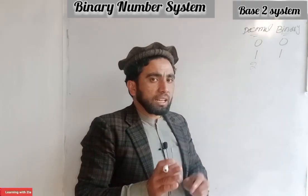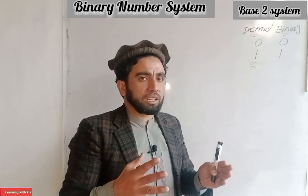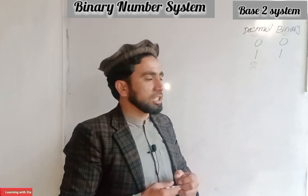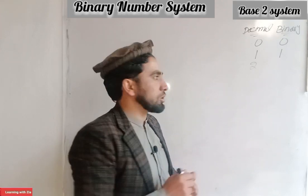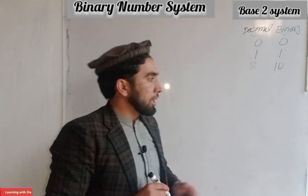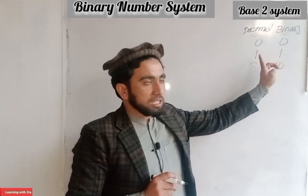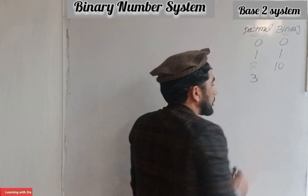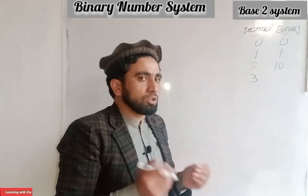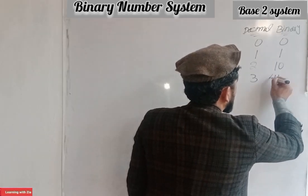We can use the decimal system alongside the binary system. The decimal number goes 0, 1, 2, 3, 4, 5, 6, 7, 8, 9. The decimal number 1 or 0, and if we use the decimal system that is less than 2, the decimal number is also 1.